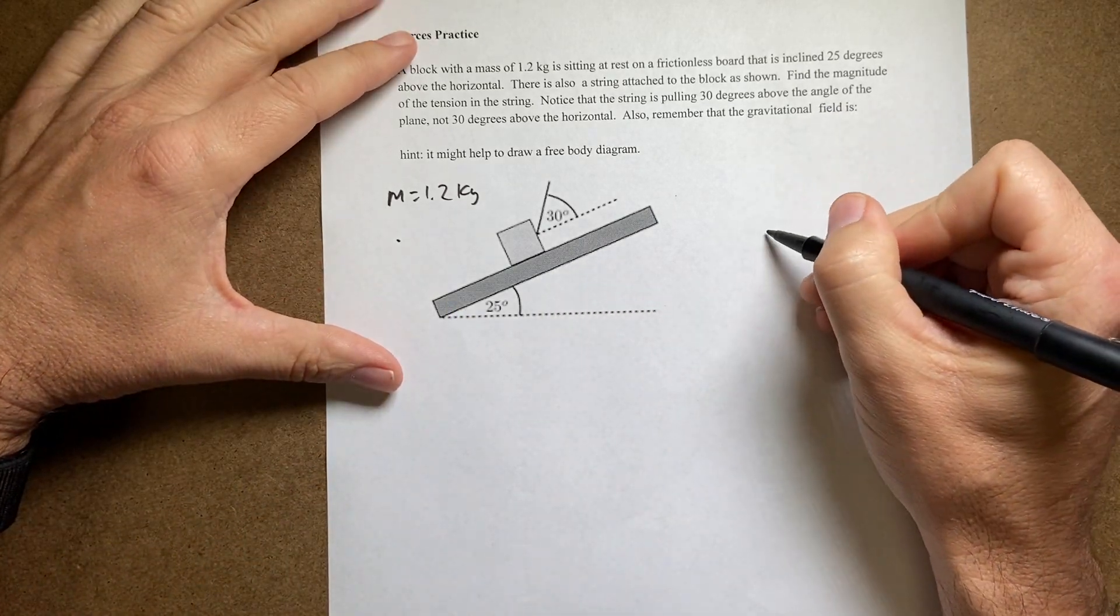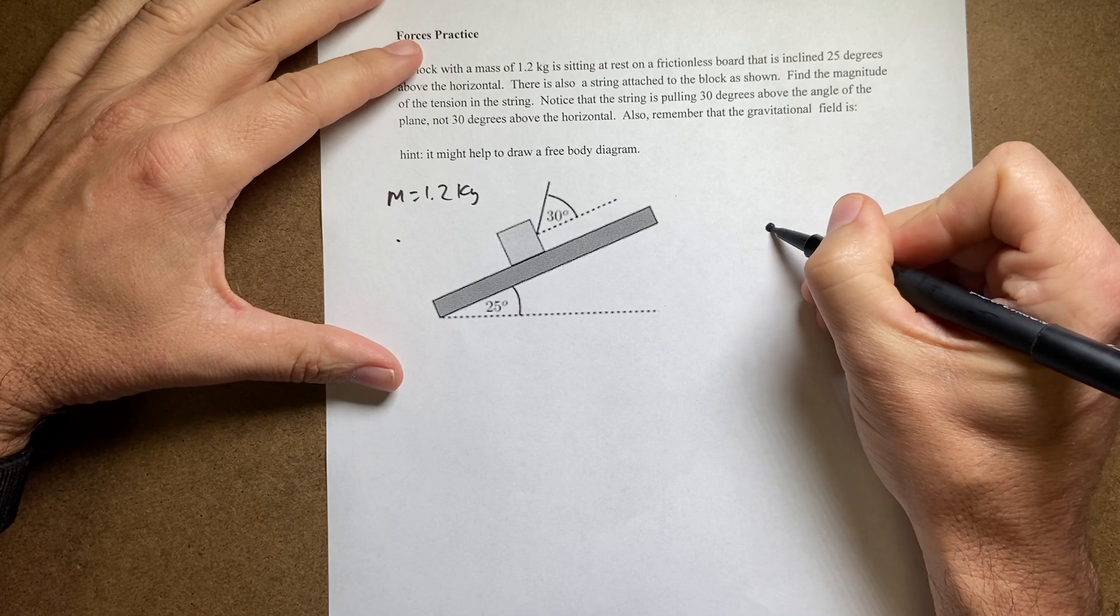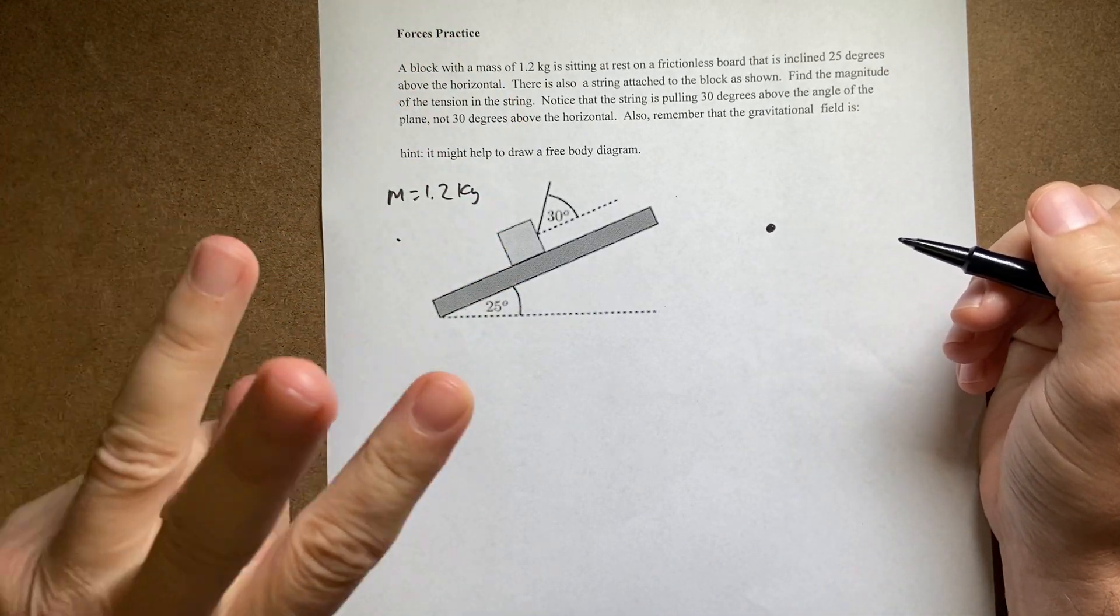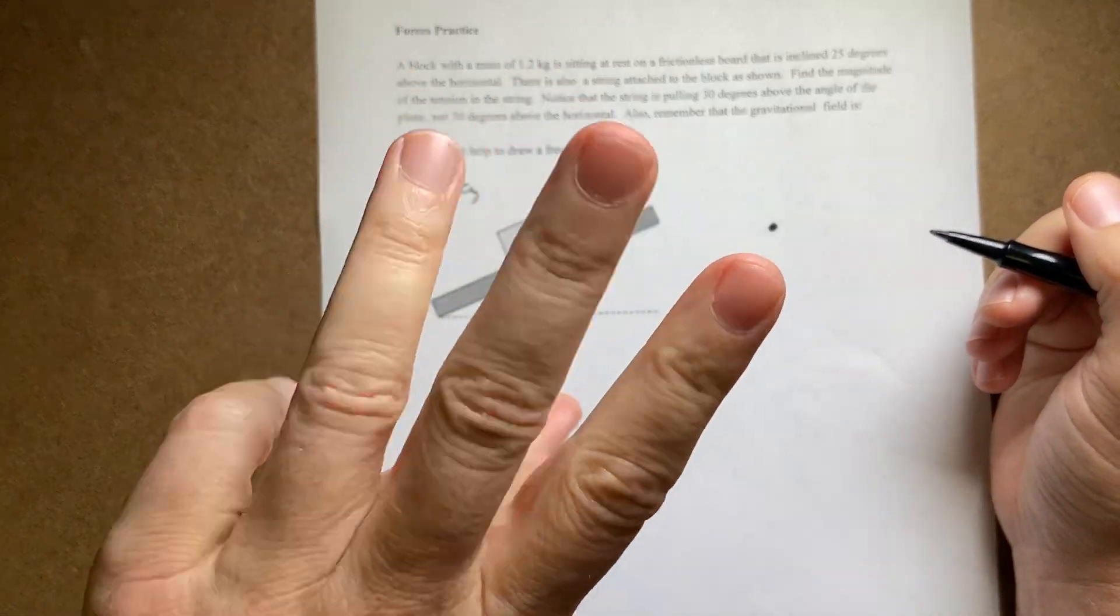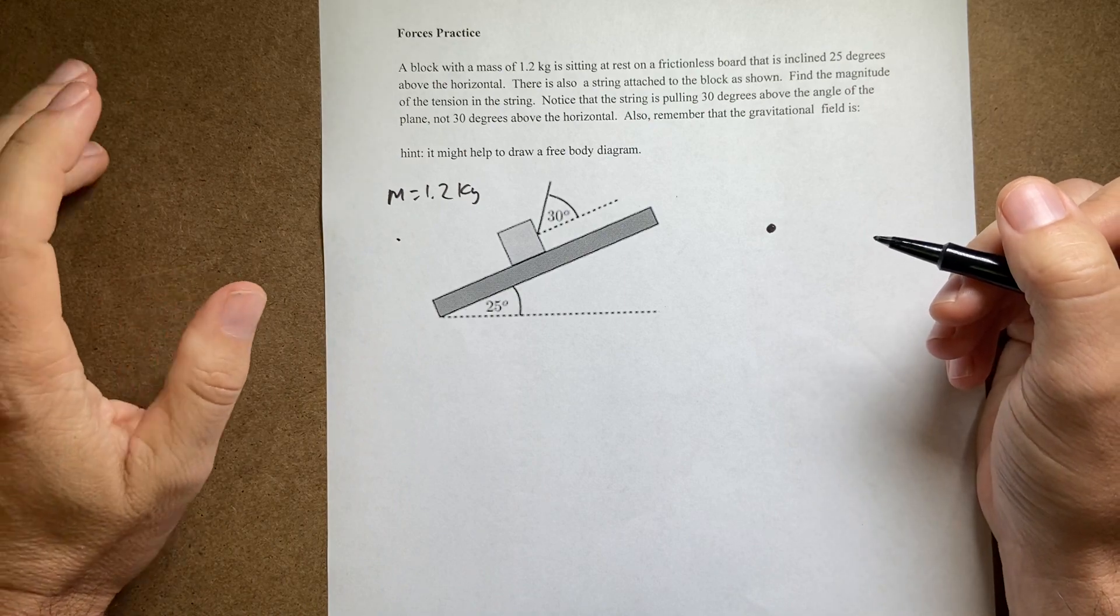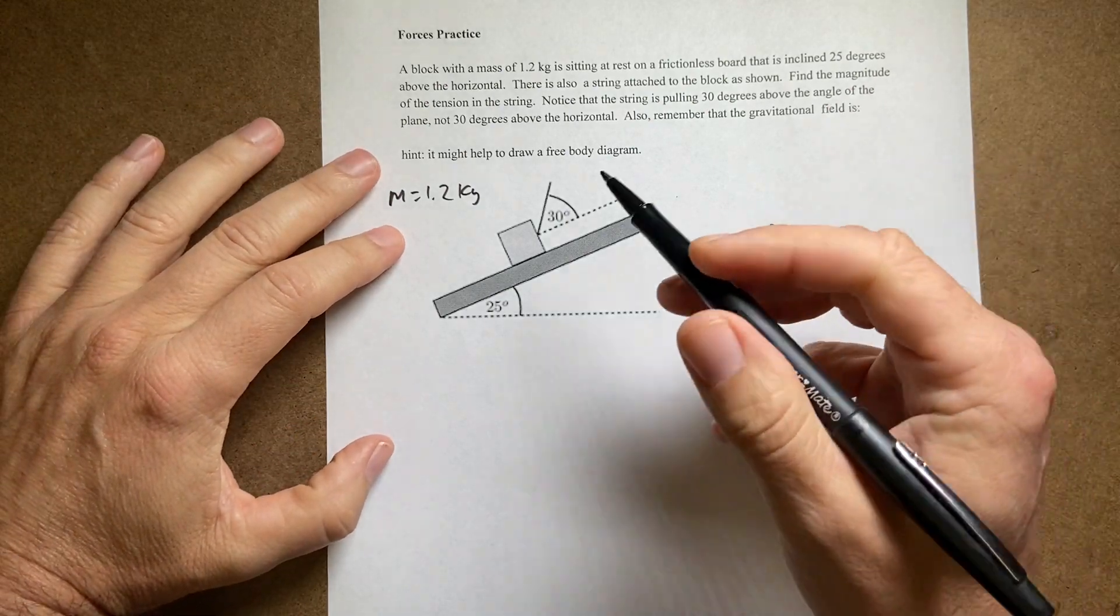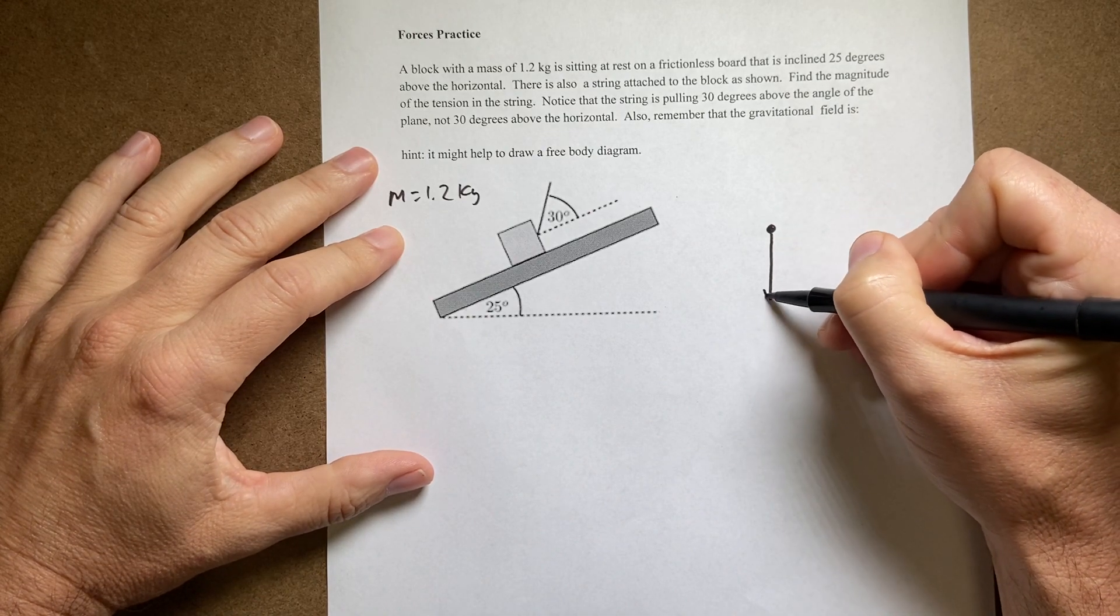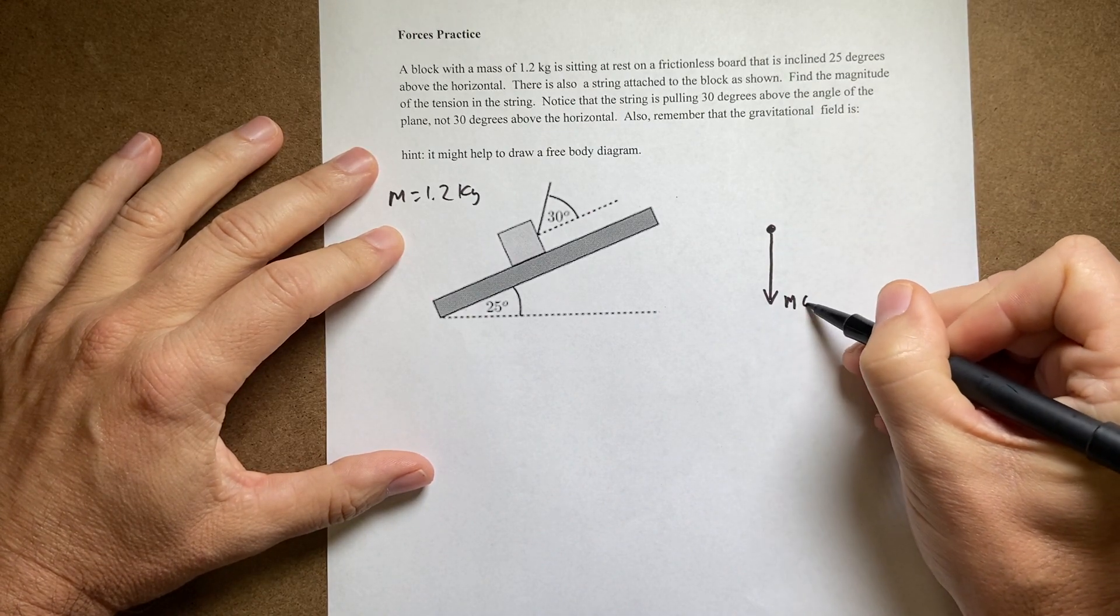So let's draw a free body diagram. I'm gonna start with a dot right there for the block. Now what forces are acting on it? There's actually only three. There's a long-range force, the gravitational interaction between the block and the earth. So I'll put that going right straight down like that, mg.